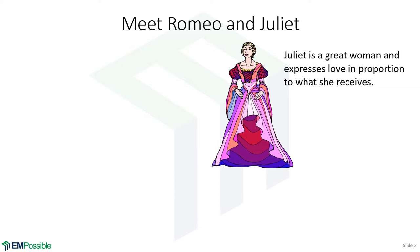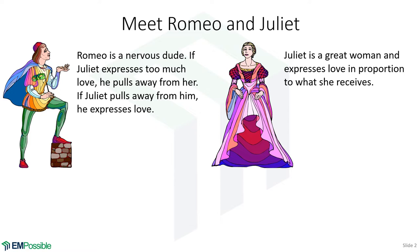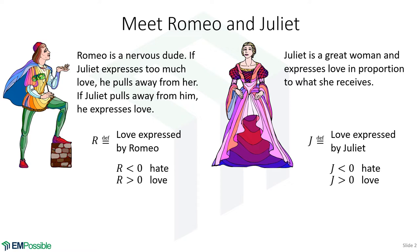Let's meet Juliet. She's a rather stable woman and she will love Romeo in whatever proportion that Romeo loves her. Romeo, he's a little bit more quirky. If Juliet pours on the love too strongly, he doesn't like that and he backs off and can even start disliking her. But if Juliet is not treating Romeo real well, I guess that's a challenge to him and he's going to pour on his love very strong.